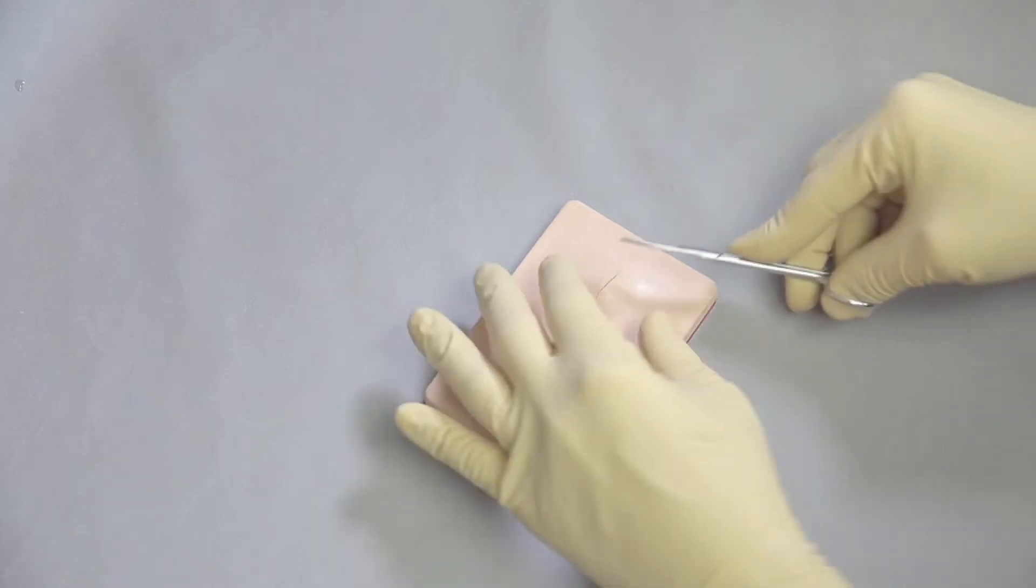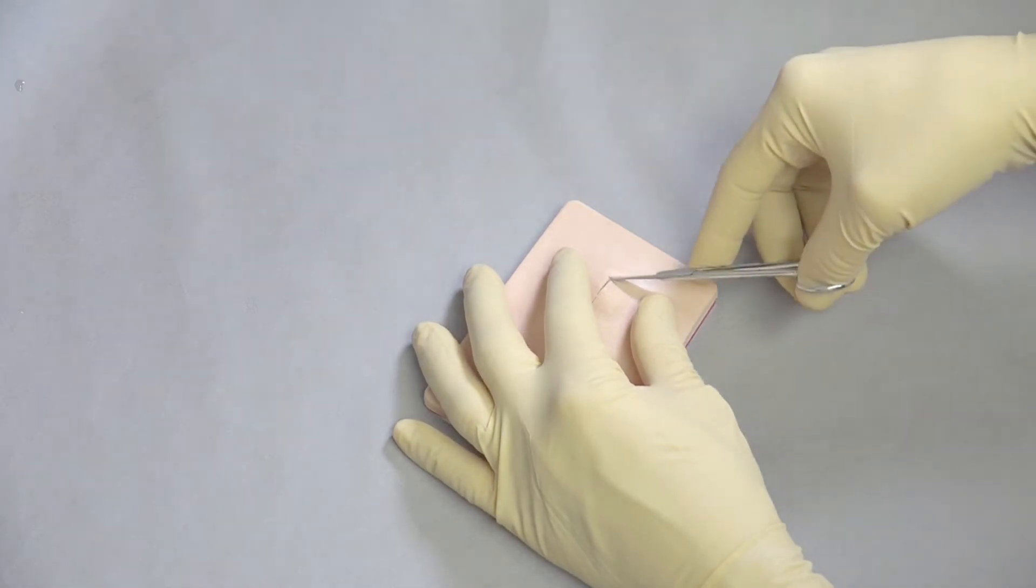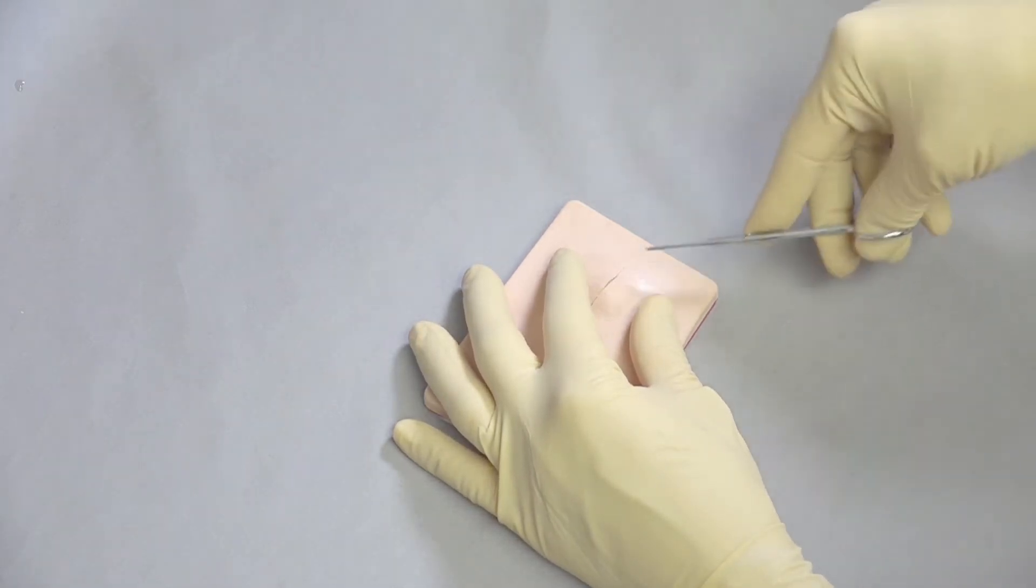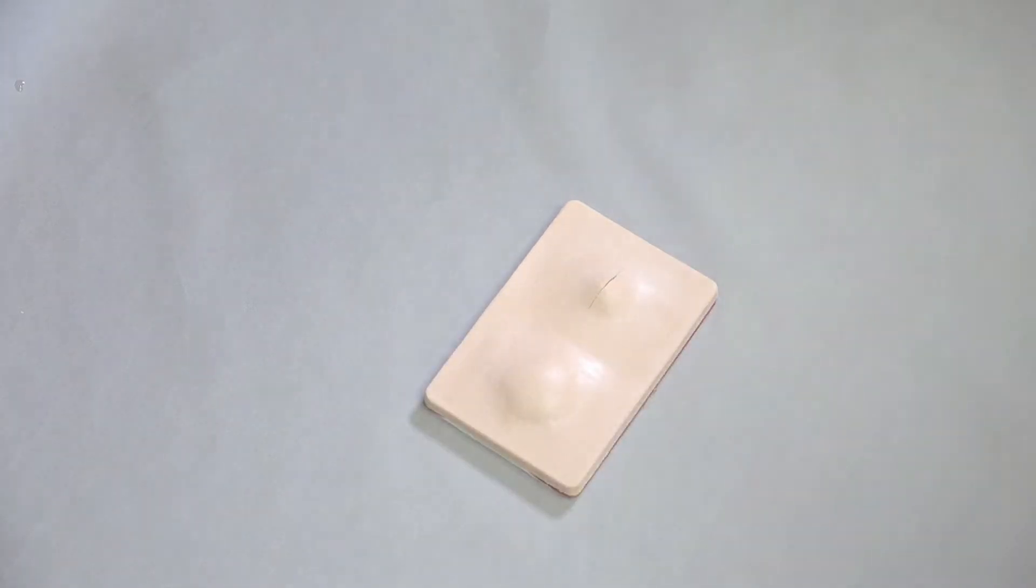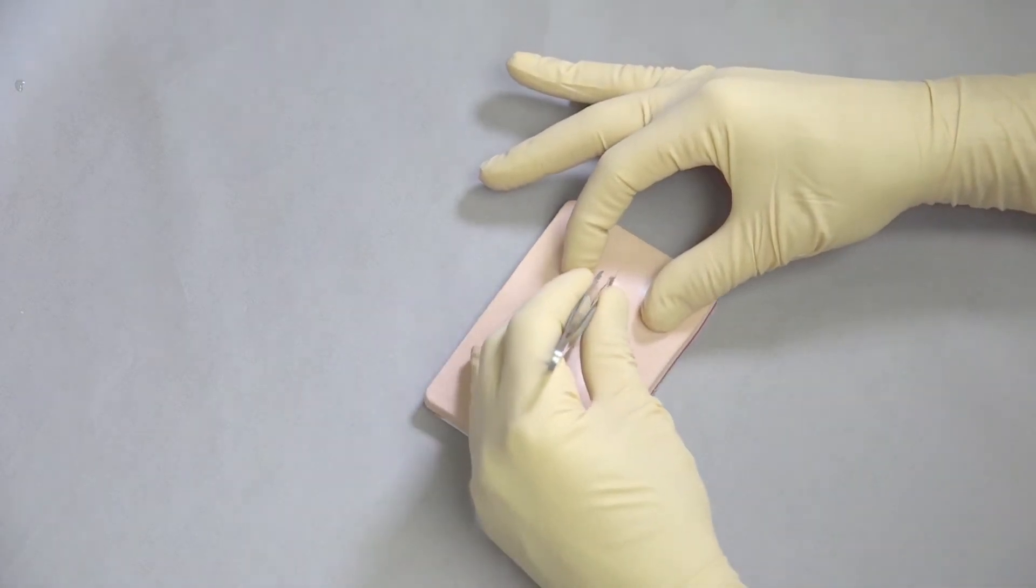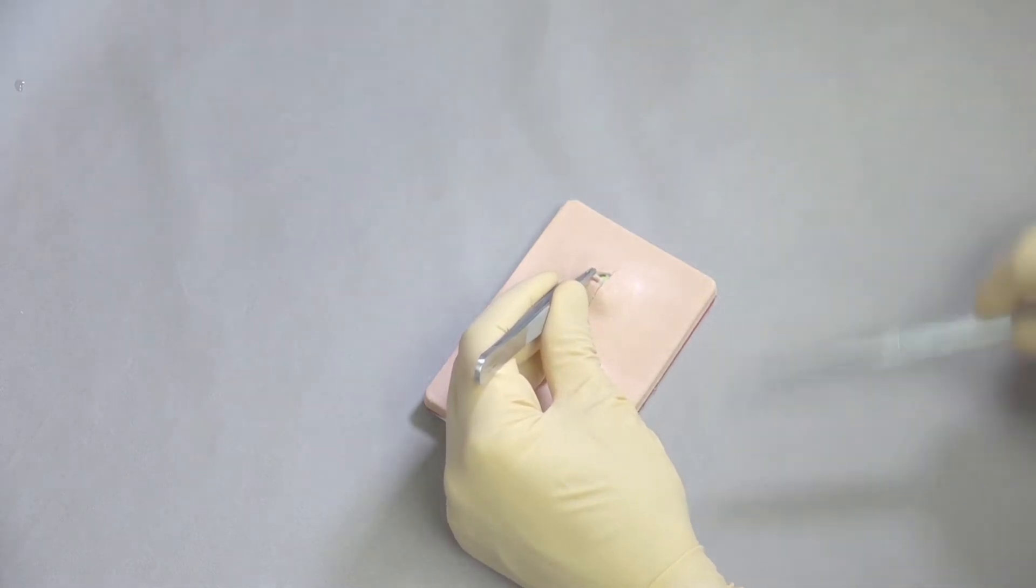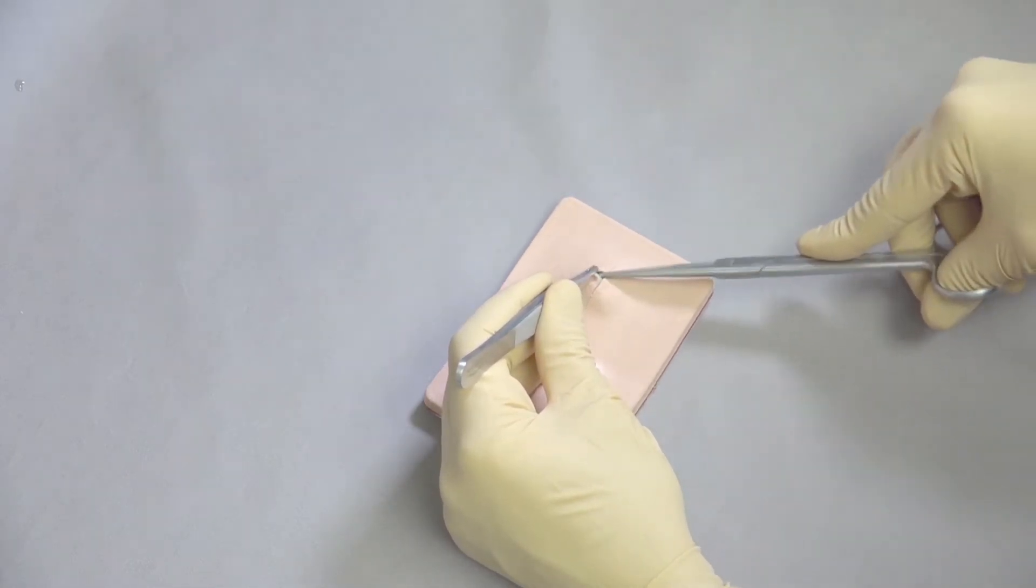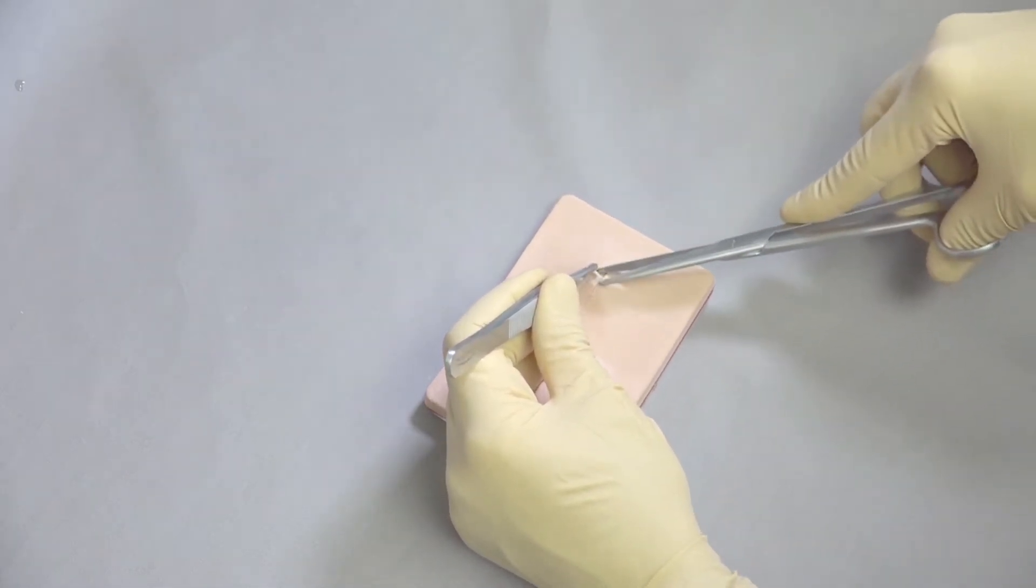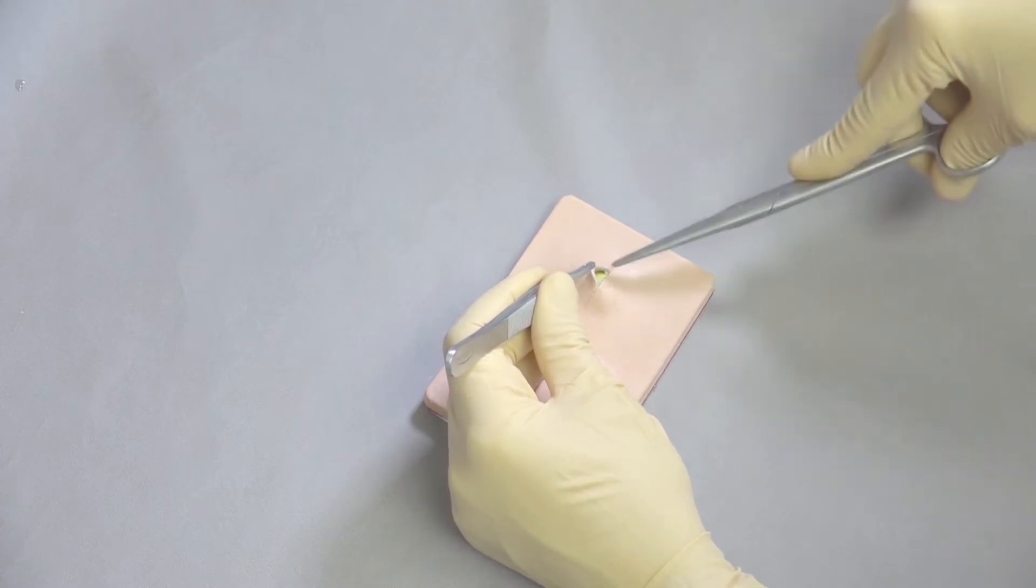At this point we can come in with scissors and work our way around and it's also very helpful to get a pair of thumb forceps. So now that we've made the beginning of the incision we can use thumb forceps to work our way around and use scissors to come underneath and separate the cyst. Using a combination of sharp and blunt dissection.